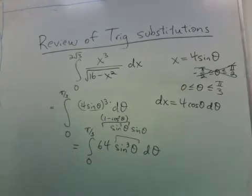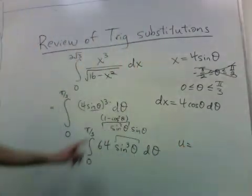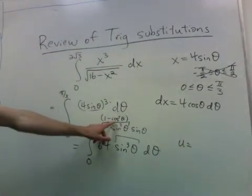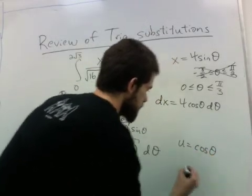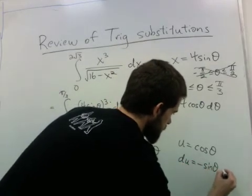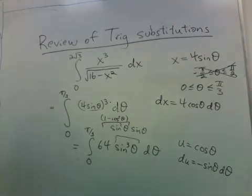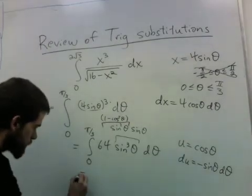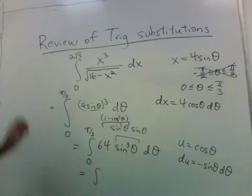So now we'll substitute u is cosine, because now the derivative of cosine or something close to it is sitting close by. So then we have du is negative sine theta d theta.